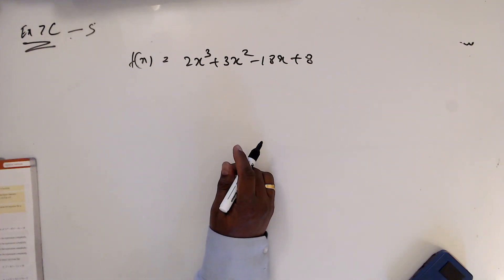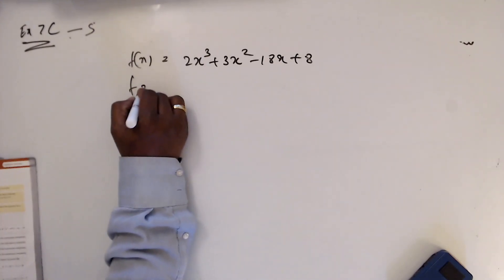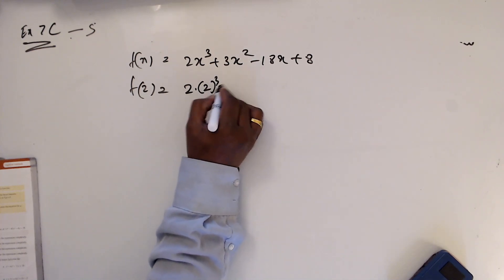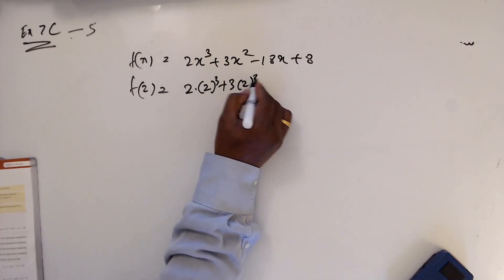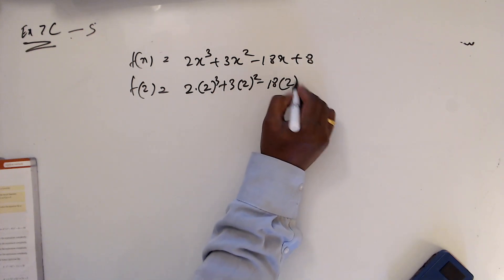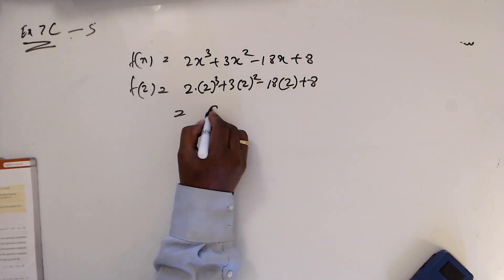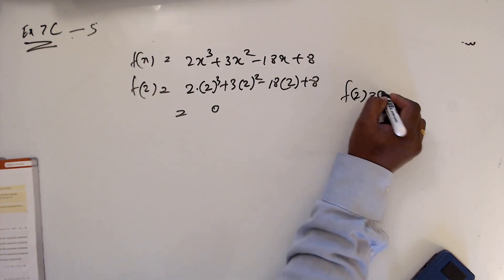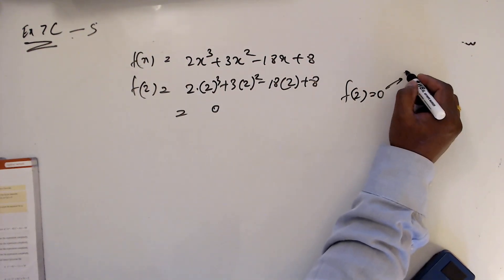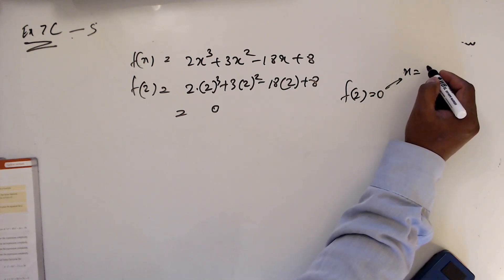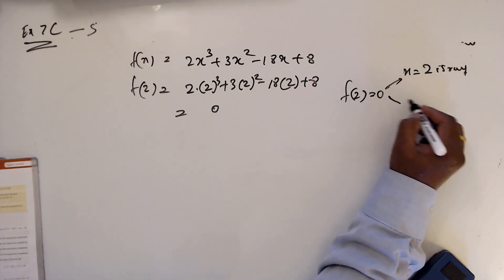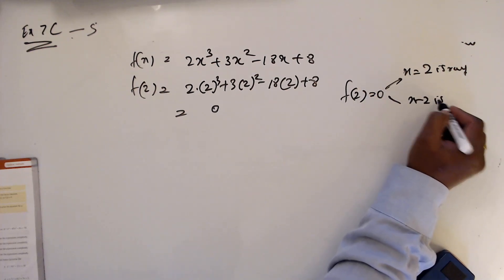Now showing x minus 2 is a factor: f(2) = 2³ plus 3(2²) minus 8(2) plus 8 equals zero. Hence x equal 2 is a root and x minus 2 is a factor.